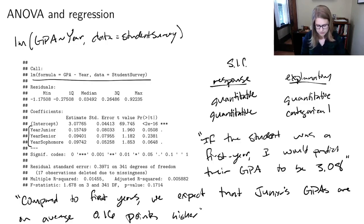Same thing with senior. Compared to first years, we'd expect seniors' GPAs to be 0.1 points higher. Compared to first years, we'd expect sophomores' GPAs to be 0.1 points higher. So we're always making the comparison to the reference group. So we always compare to reference group.